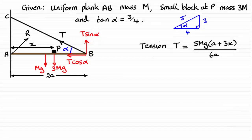For this next part of the question, I'm assuming you've already watched the previous part. What we're told now is that the magnitude of the horizontal component of the force exerted on the plank at A by the wall is 2mg. And what we've got to do is find x in terms of a.